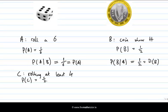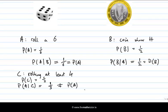Now let's look at conditional probabilities. What's the probability of rolling a 6, given that I roll at least 4? That's the probability of A given C. Now I only have 3 outcomes to consider — 4, 5, or 6 — and the probability of one of those 3 is 1 over 3. So the probability of A given C is not the same as the probability of A. P(A) is 1/6, but P(A|C) is 1/3. Intuitively that makes sense — rolling at least 4 is not independent of rolling a 6.